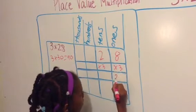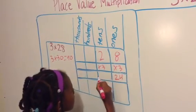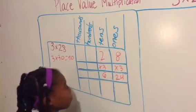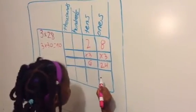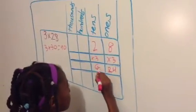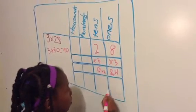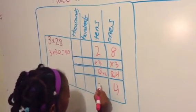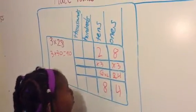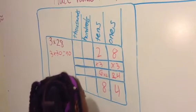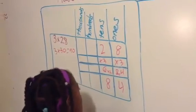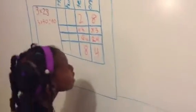3 times 8 equals 24. 3 times 2 equals 6. We can't have 24 ones, so we have to regroup. 6 plus 2 equals 8. We have 8 tens left and 4 ones left, so our answer is 84, and that's close to 90, so I think our answer is correct.